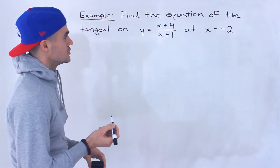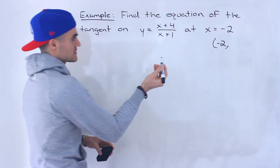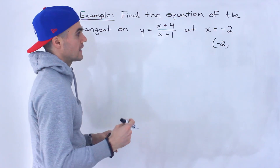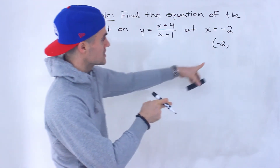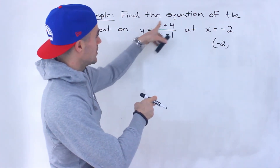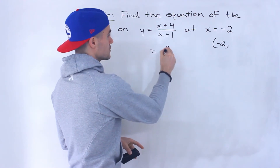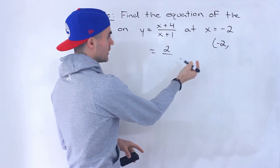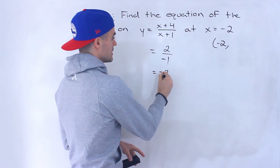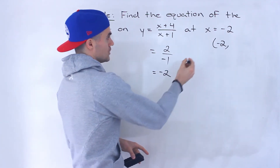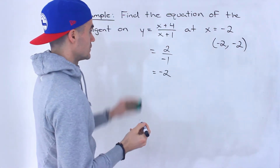The first thing I'm going to do is find the corresponding y value. We're only given the x value, and we're going to need the full coordinate to find the equation of the tangent. To get the corresponding y value I would plug x = -2 into the function: negative 2 plus 4 gives positive 2, and negative 2 plus 1 gives negative 1, and 2 divided by negative 1 gives negative 2. So the full coordinate is (-2, -2).